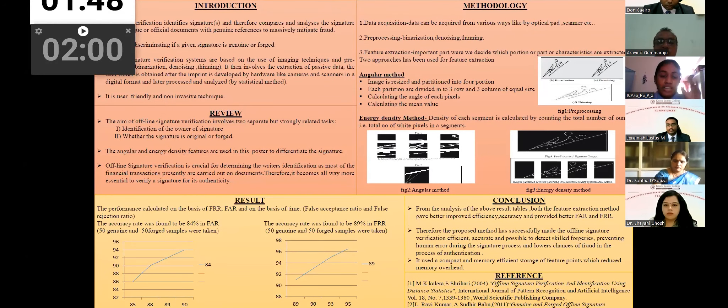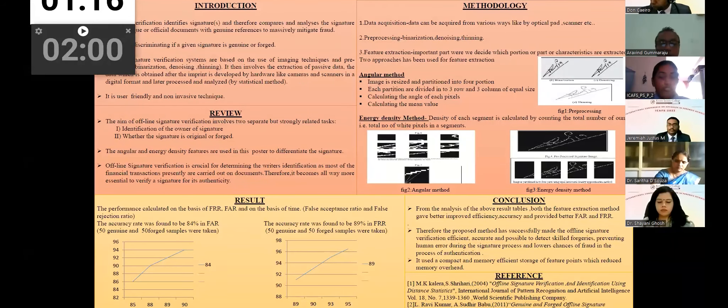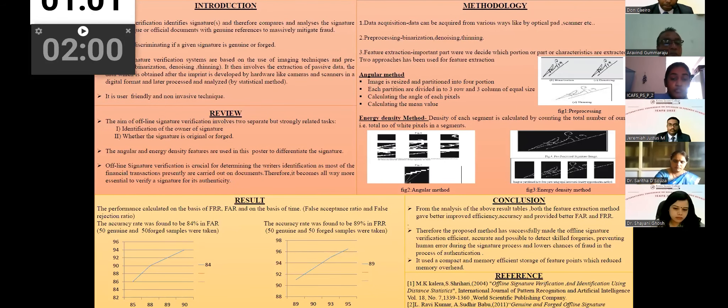The next is the energy density method. In this method, the image is divided into various segments and energy density of each segment is calculated by counting the total number of ones. Ones in sense, it is the total number of white pixels in a segment. The image is segmented to four equal parts by counting the total number of ones of each of them. For this study in the review, it was taken 50 genuine and 50 forged samples and the performance based on the angular and energy density method was calculated on the basis of FRR and FAR, that is false rejection ratio and false acceptance ratio. And it was found out that the accuracy rate was 84% in FAR and accuracy rate was 89% in FRR.